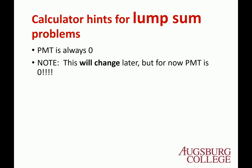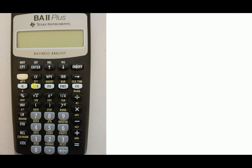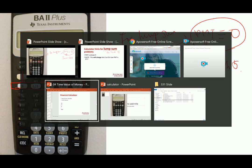Now, one hint for the lump sum problem — the lump sum problem is the problem for this chapter, just a one-time cash flow. You don't have to worry about PMT. For Chapter 4 lump sum problems, PMT is always, always, always zero. We're going to use PMT starting from Chapter 5.